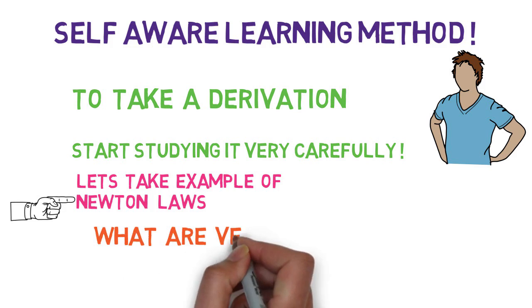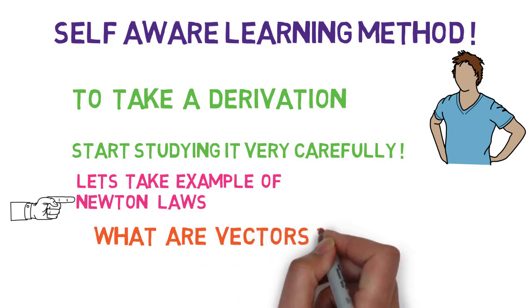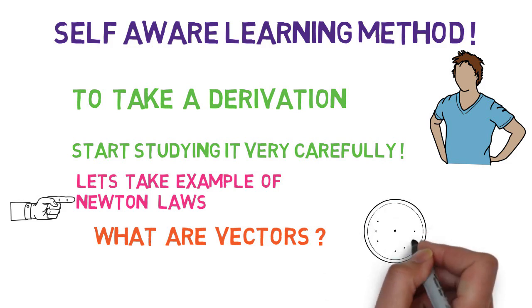For example, what is a dot product, what is a cross product, what is a vector. Then go and study those vectors and then study Newton laws and then come back to this derivation.